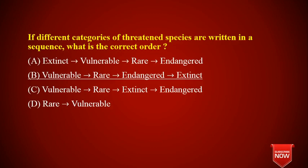If different categories of threatened species are written in sequence, the correct order starts with the least threatened: vulnerable, then rare species (whose numbers have become very few and are rarely seen), then endangered (very few individuals remain), and then extinct in the wild, which is the worst condition — only surviving in captivity.